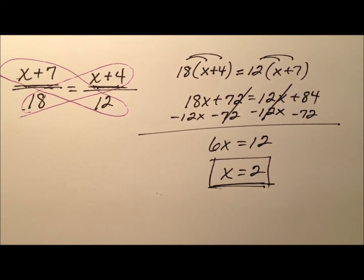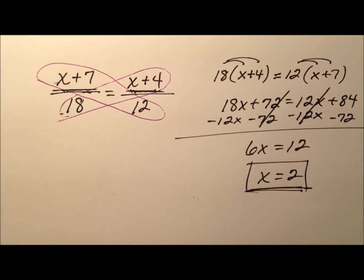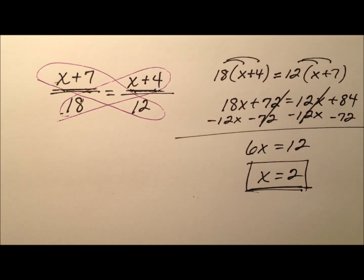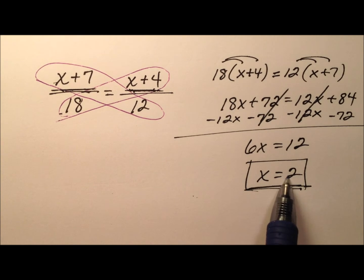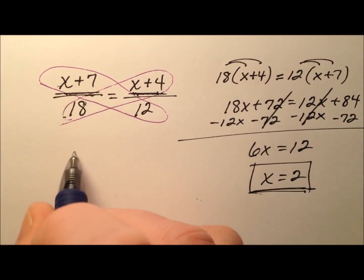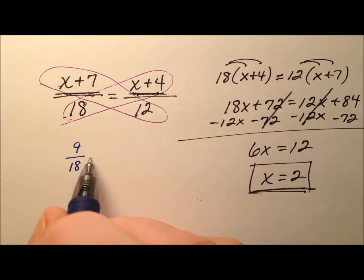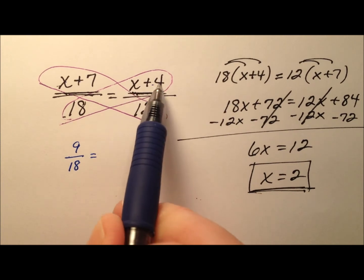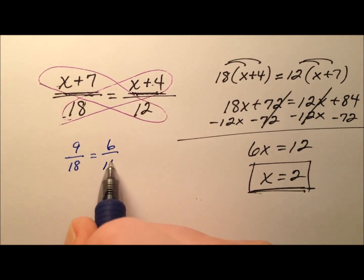But of course let's go ahead and plug it back in and make sure that it works. So if the value for x is 2, we'll have 2 plus 7 is 9, so 9 over 18. And over here we'll have 2 plus 4 is 6, so 6 over 12.